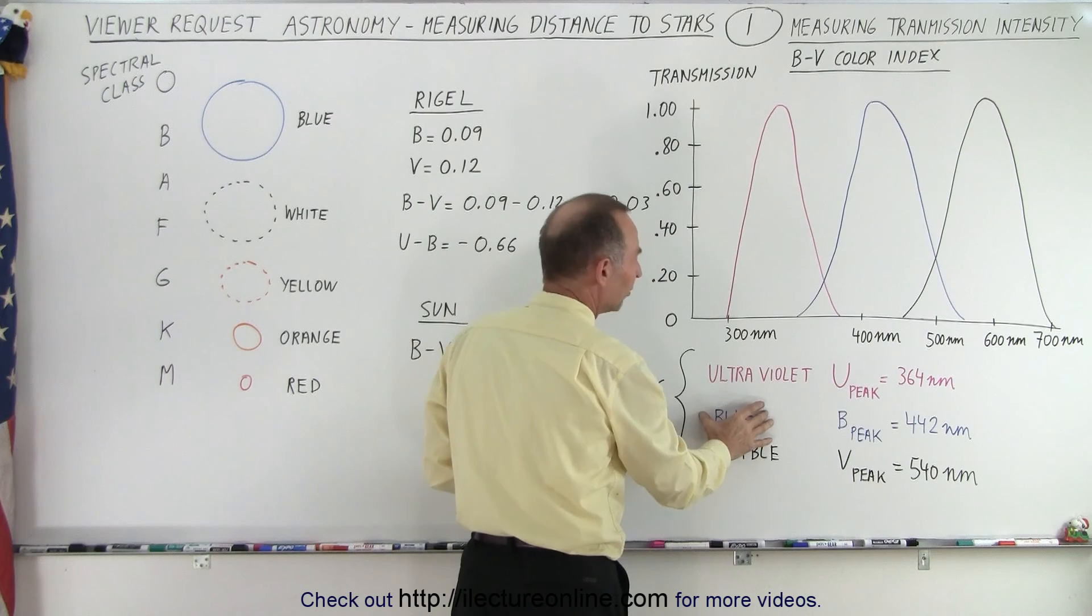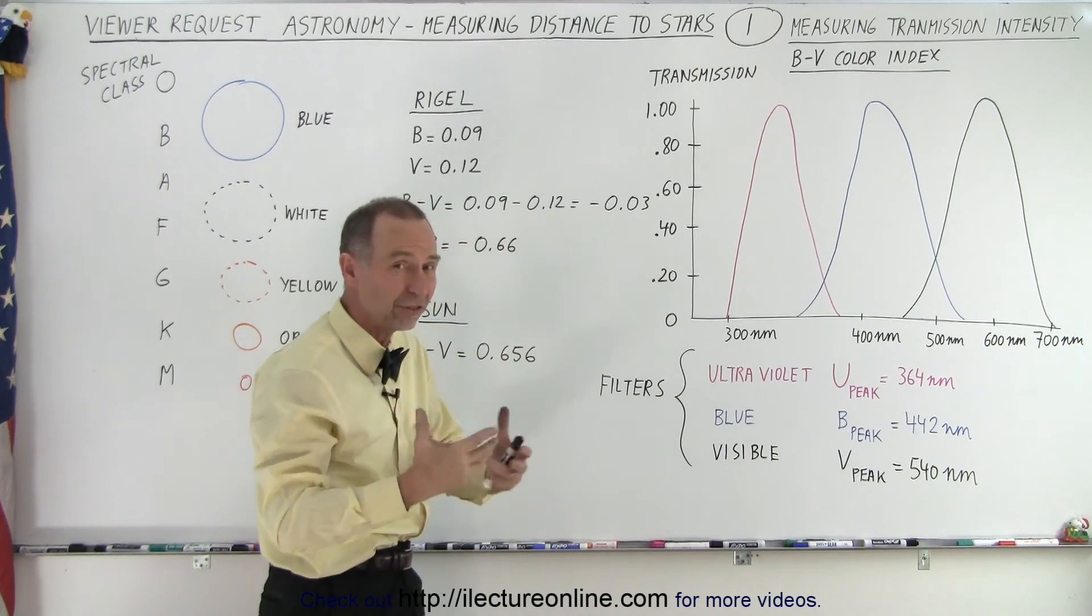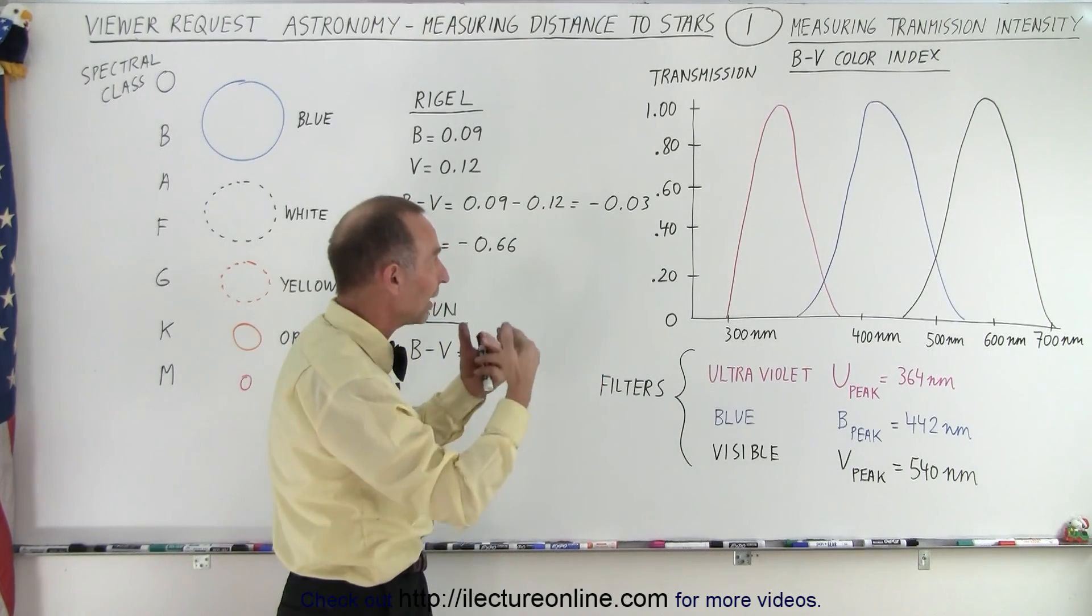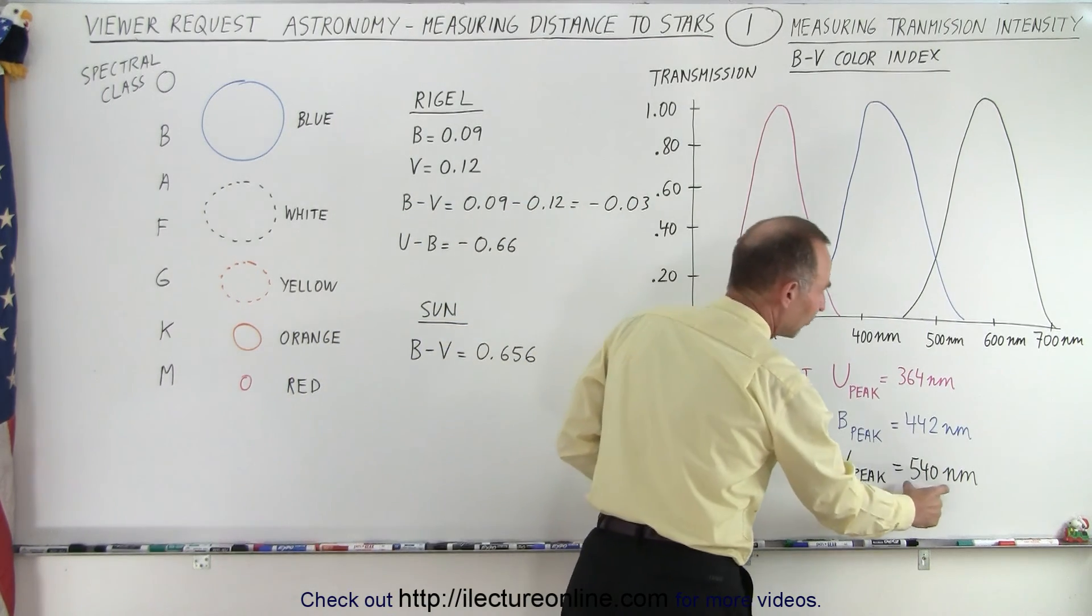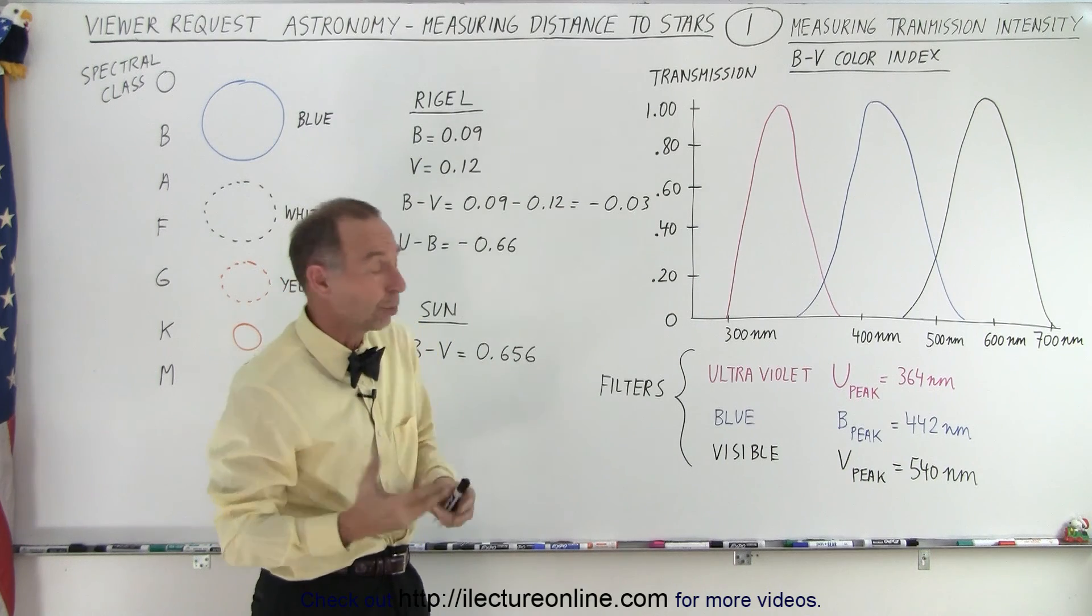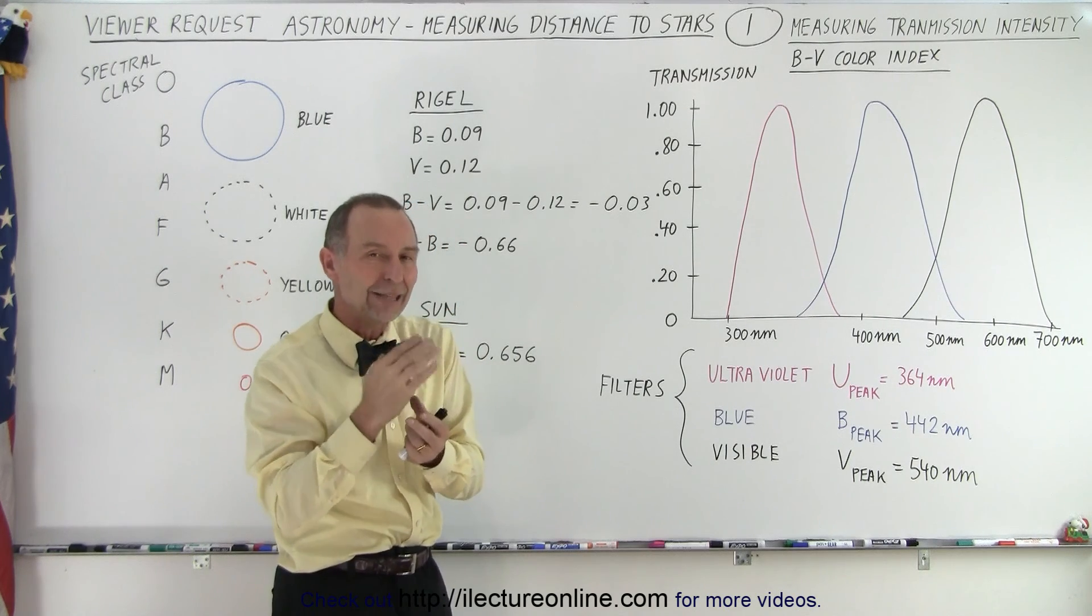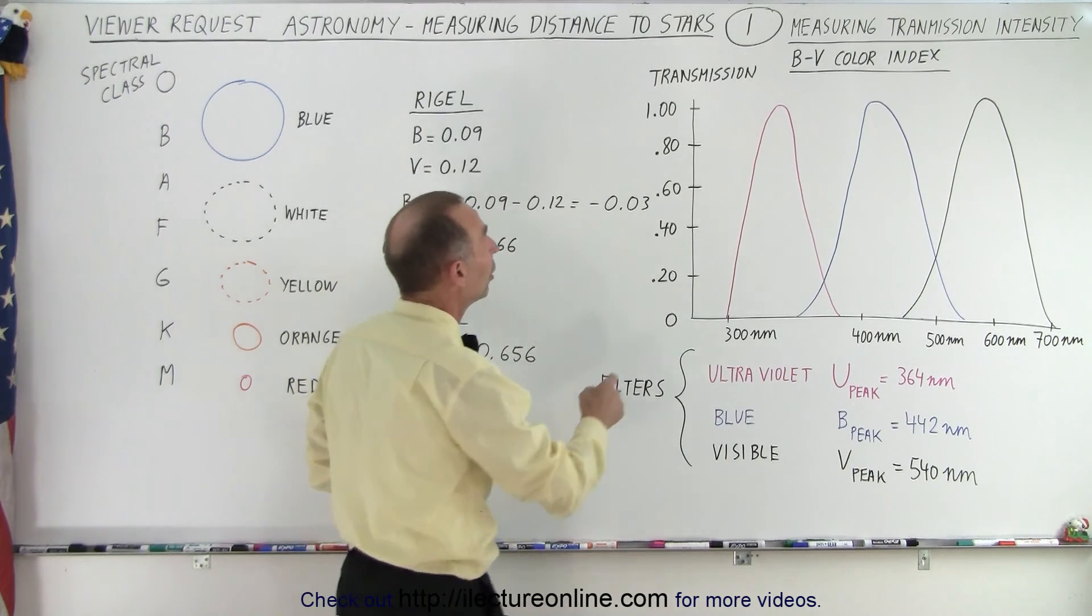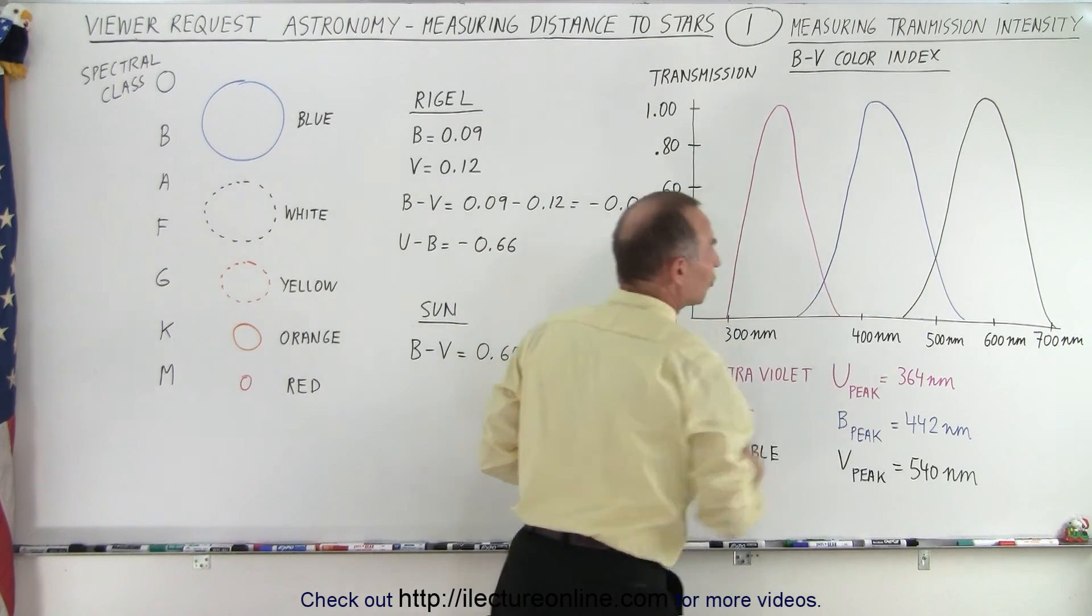We can also use a blue filter. Notice the maximum transmission of a blue filter occurs at 442 nanometers. So we measure the intensity of the light coming from a star through a blue filter. And we try to figure out what percentage, what fraction of the light actually makes it through the filter. And then we have what we call the visible filter, which peaks at 540 nanometers. And we do the same thing. So we measure the amount of light coming to us through the filter using telescopes, and we put a filter in its place. And then we measure the percent or the fraction of the light transmitted through that particular filter. And we then use that information to calculate what we call the BV color index.